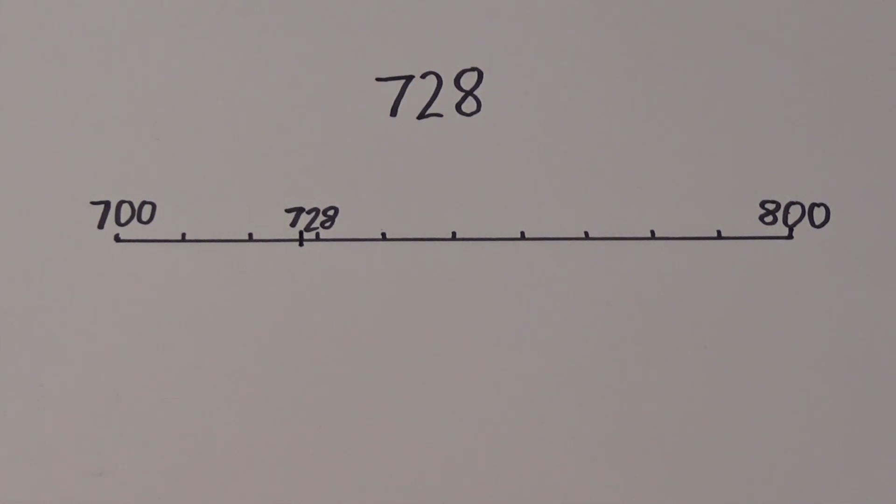We can see just by looking that 728 is closer to 700 than it is to 800, so we must round down to 700. We can also check how far away it is from 700 by counting on 28, and how much further it is from 800 by counting on 72.